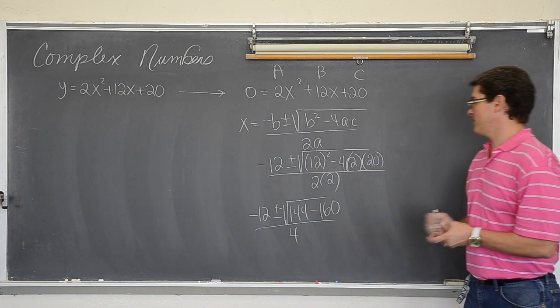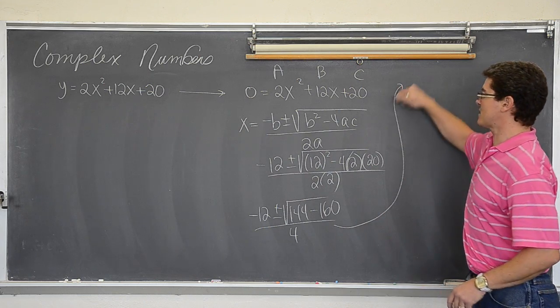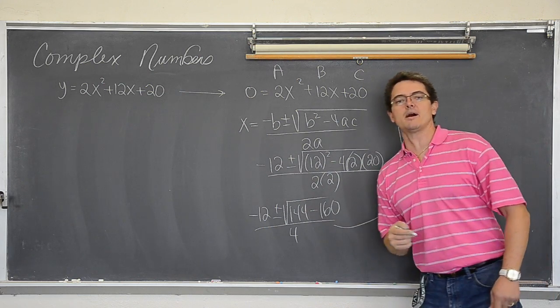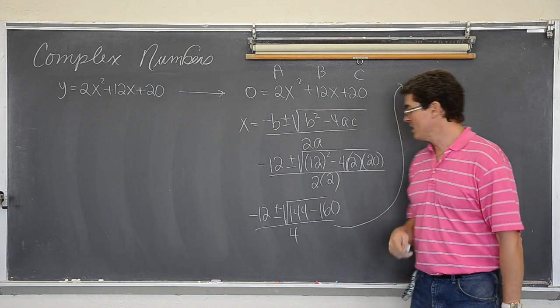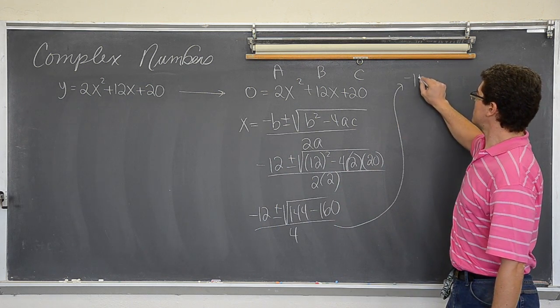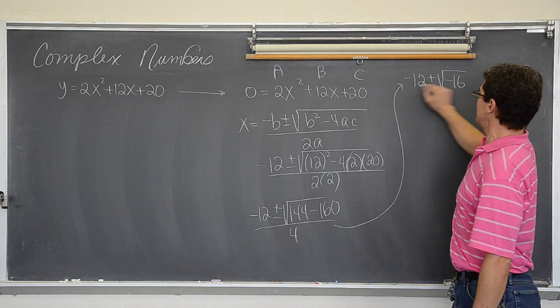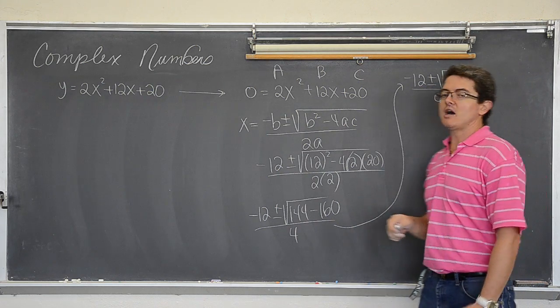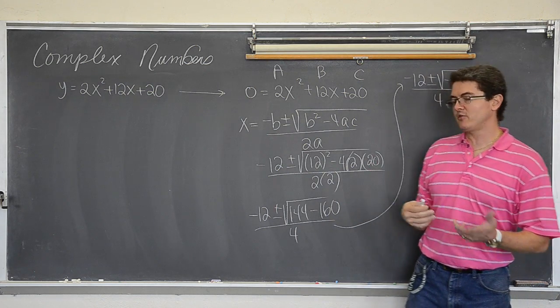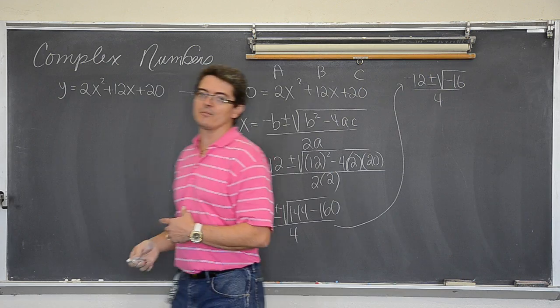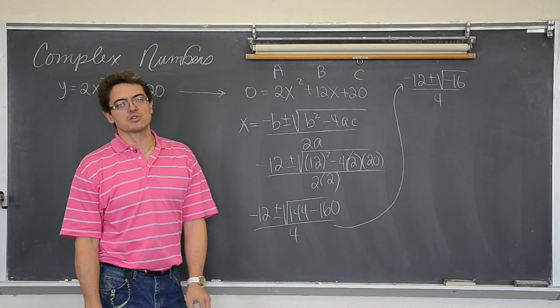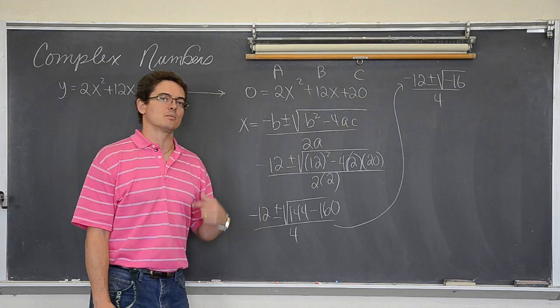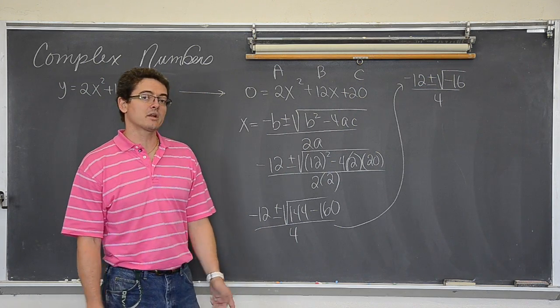Now here is where we get into the imaginary numbers and complex values. 144 minus 160 is negative sixteen. So we get negative twelve plus or minus the square root of negative sixteen over four. Now if it was any other math area, like if you were just earlier in the math year or in algebra one or geometry, you might just stop and say there is no solution. But we are studying complex numbers, the imaginary solution. So we are going to keep going.